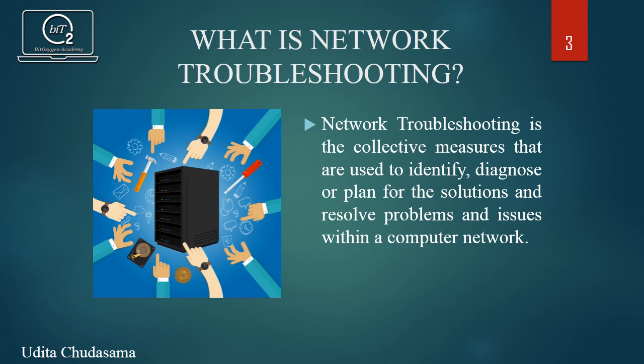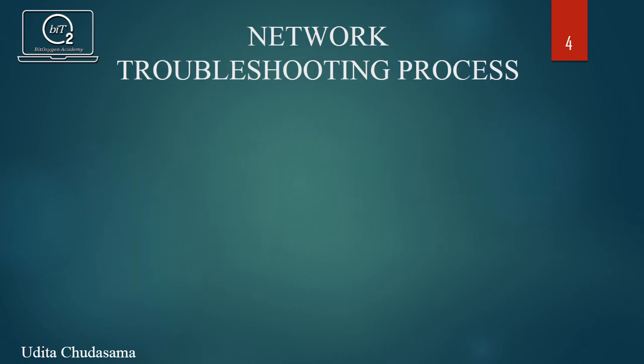Network troubleshooting is generally done to recover and establish network or internet connection on end nodes or devices. It can be a manual or automated task. Now let us discuss how to actually apply troubleshooting in a network. We have the network troubleshooting process, which consists of five steps that describe the whole process from identifying a problem to finally resolving it.